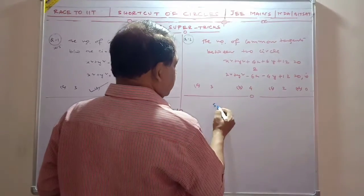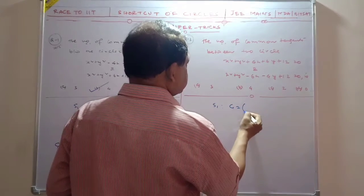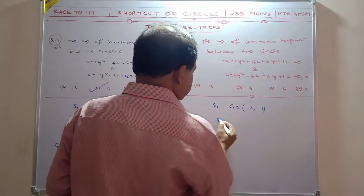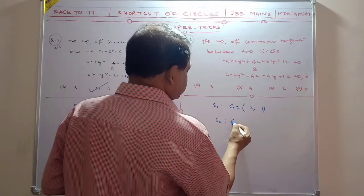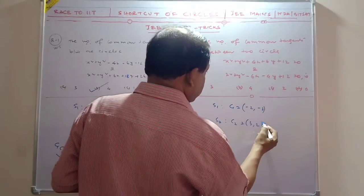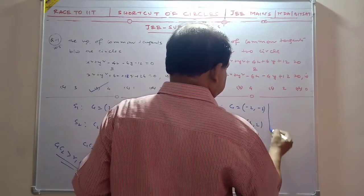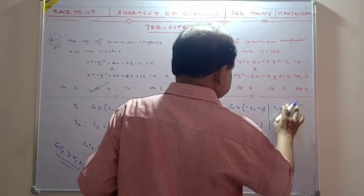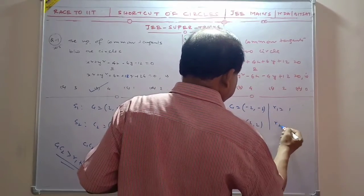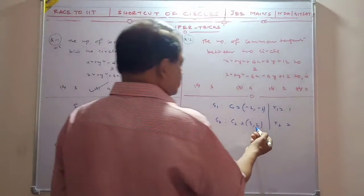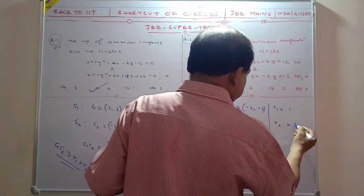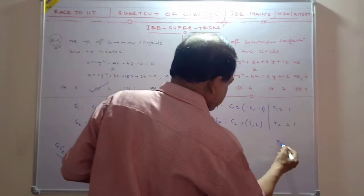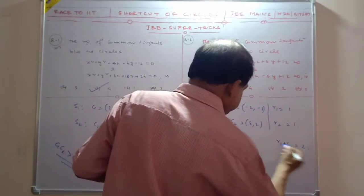Let me show you another one. Here S1 has center C1 at minus 2, minus 3, and S2 has center C2 at 3, 2. And R1 here, R1 is 1. And R2 is also 1. So R1 plus R2 is 2.